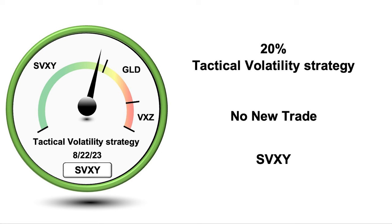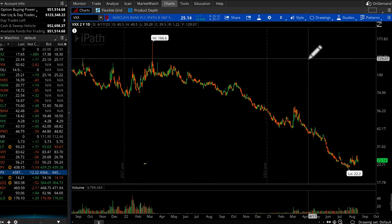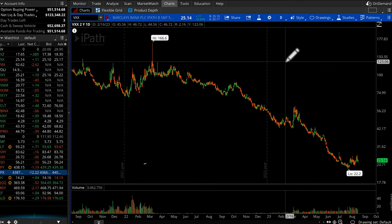In our case, this will already be true because we only ever get the green light to short volatility when it is mid to low — that's how the strategy is designed. So here we are inside the thinkorswim trading platform. Yours might look a little different than this, but all the functionality will be the same. So now we'll go over to the analyze tab.